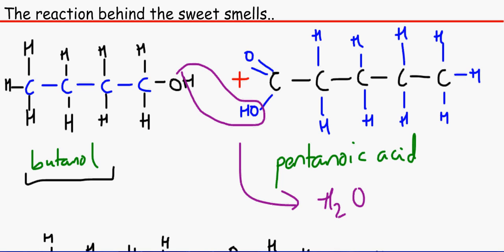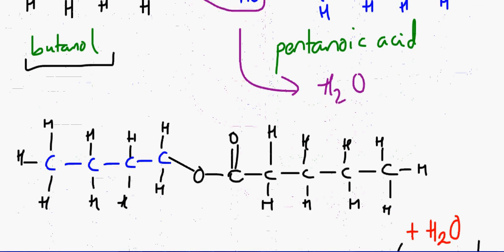The way to remember where the OH and which one reacts with what is that pentanoic acid has got two oxygens and we don't want it to be too greedy, so we would remove one oxygen from there.